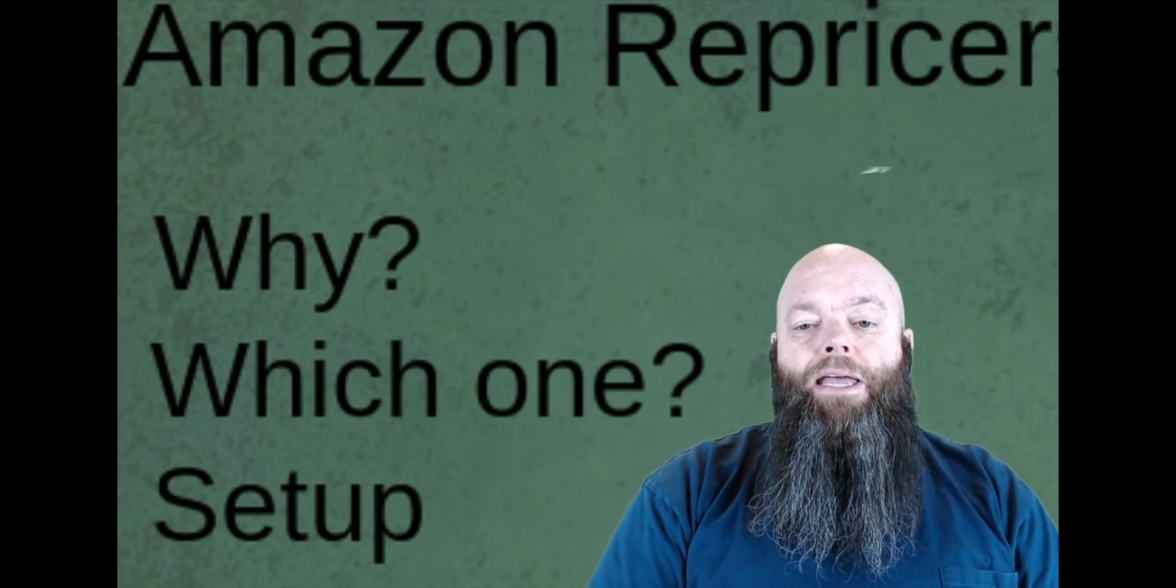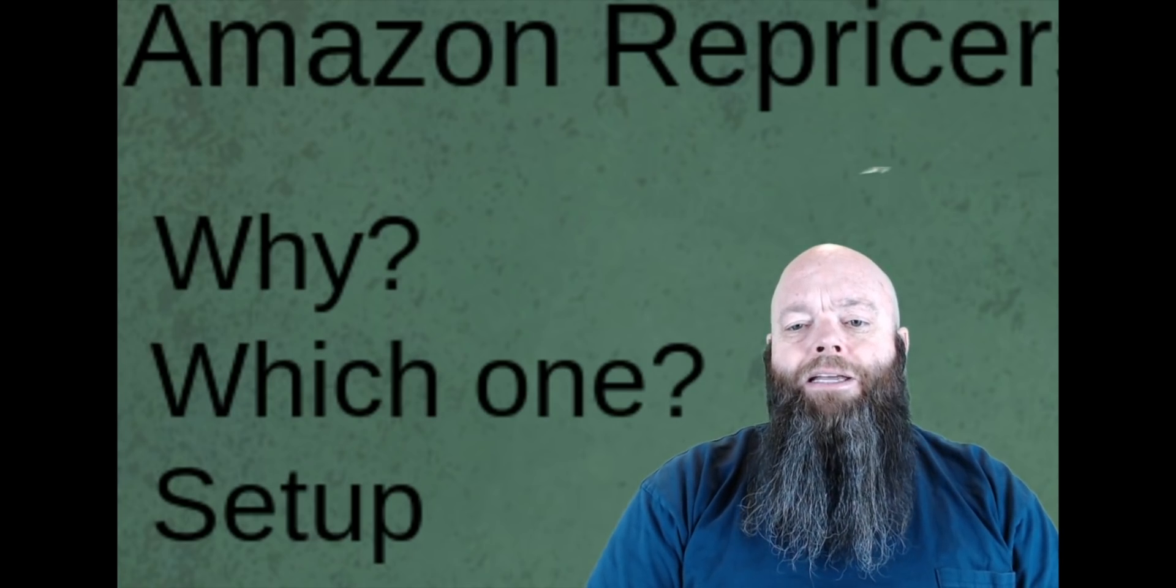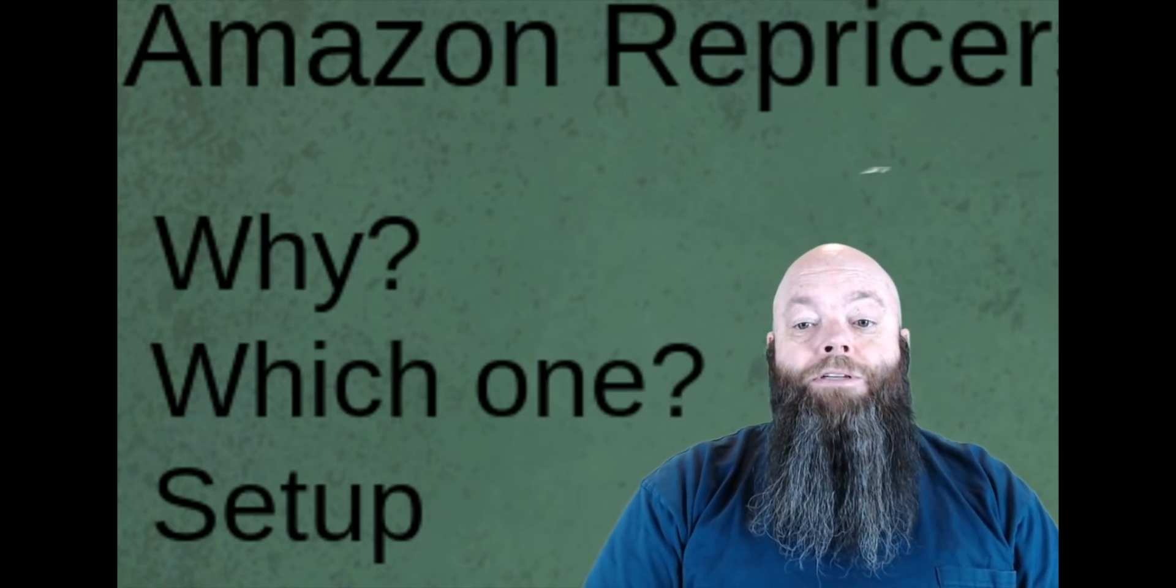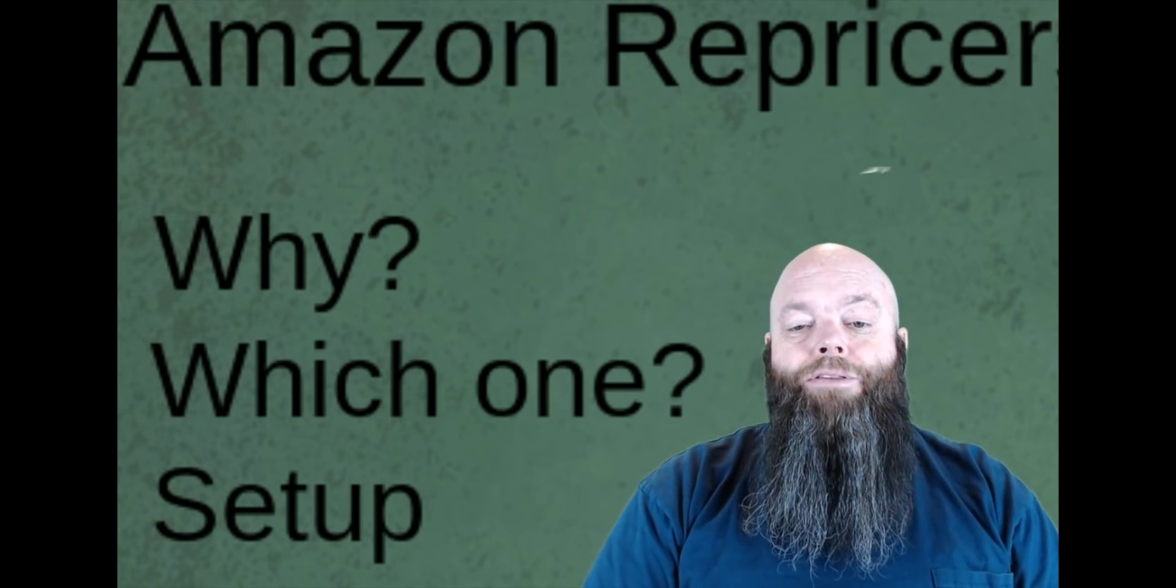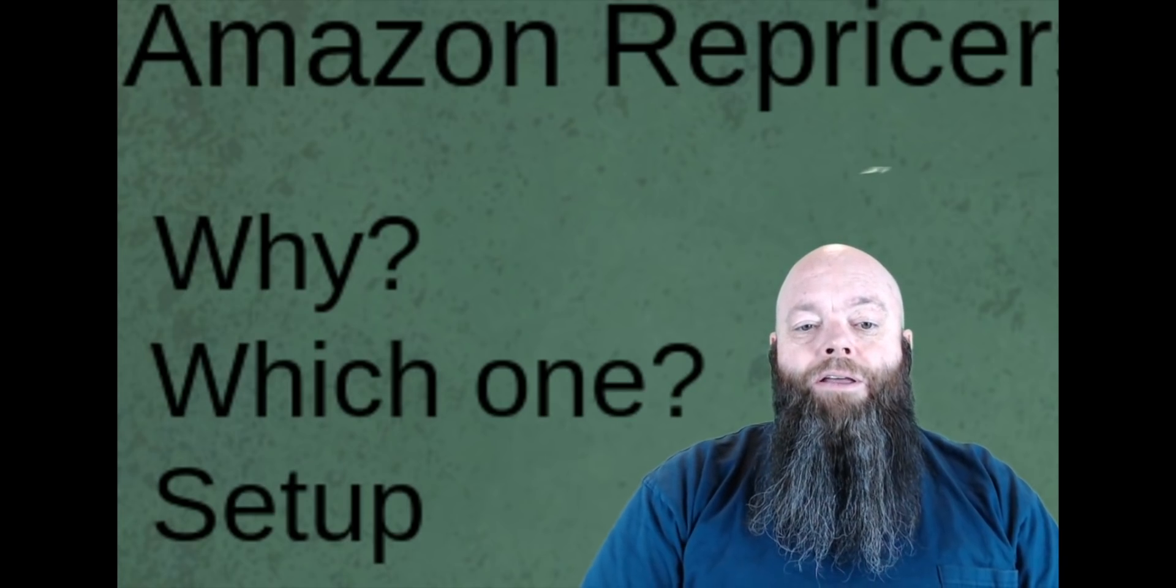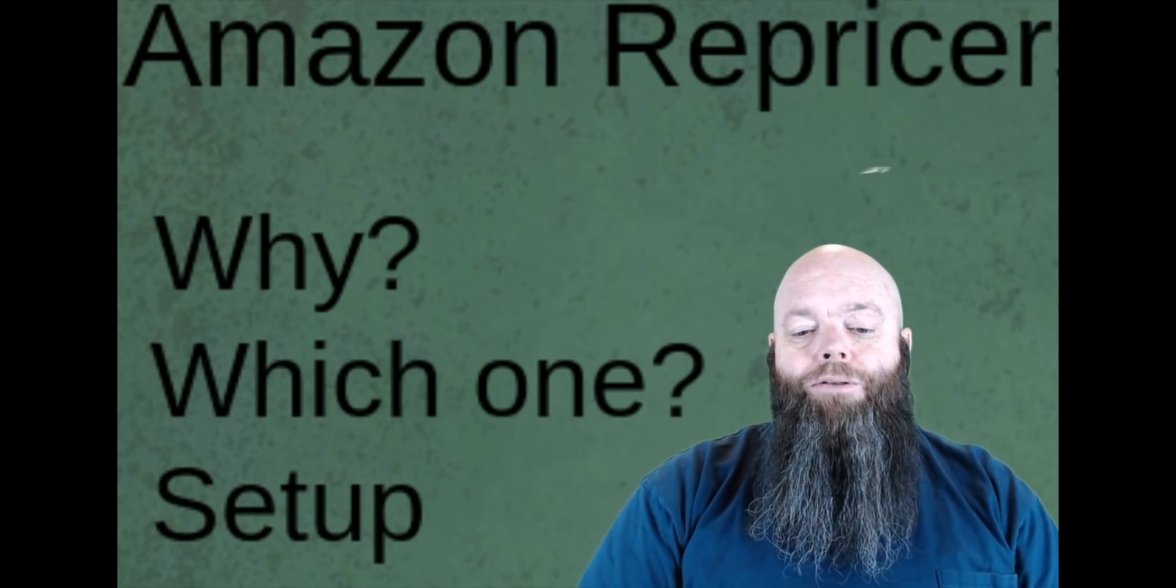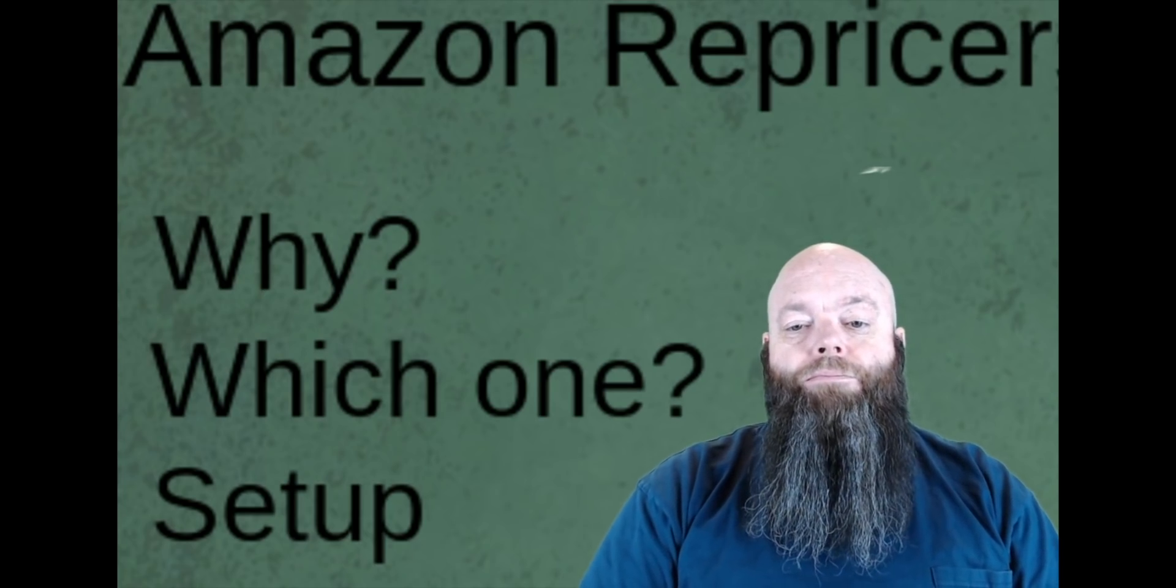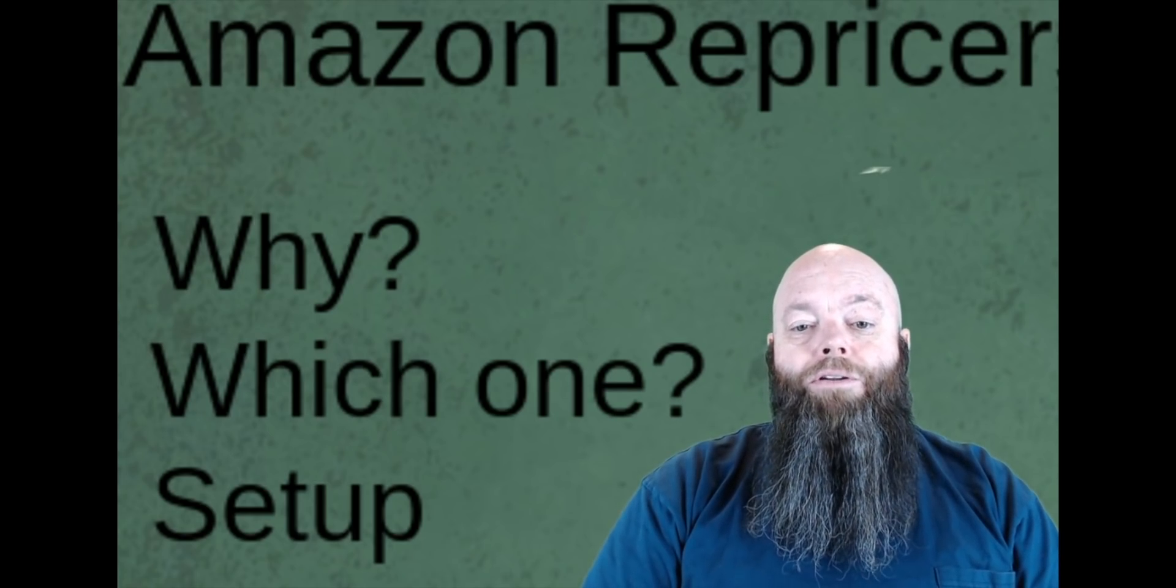The prices run the gamut. BQool might be the cheapest at $25 a month for a certain number of listings. Channel Max might be next at $35 or $36. Aura is a newer one at $57. Some are very expensive - Sellery is like 1% of your sales, and my buddy uses one that's like $500 a month. The nice thing about the cheapest one, BQool, is if you're using Inventory Lab they work together.